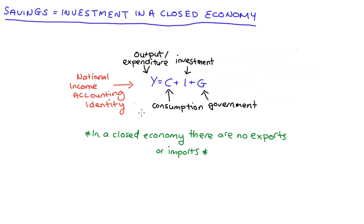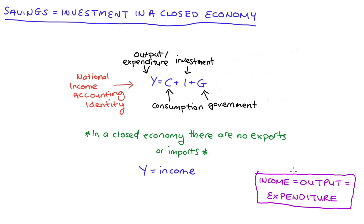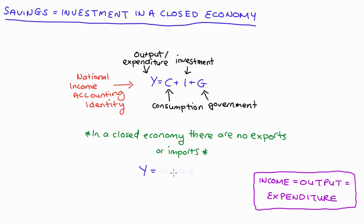All these categories are expenditure categories. We can also take Y to be equal to income. This identity comes from the general identification of income with output and expenditure. I have done another video on that identification, so I'll link to it in the description below if you're interested. From the income perspective, we can ask ourselves what do we do with our income in this closed economy?